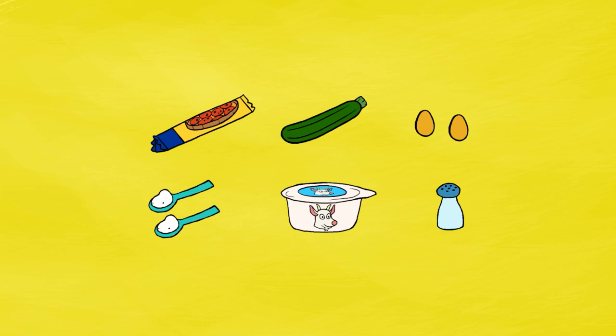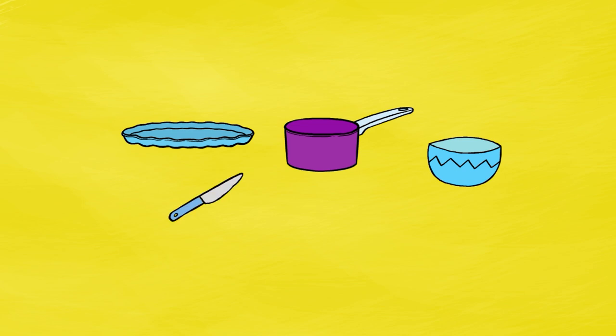Then you need the following kitchen utensils: a pie dish, a saucepan, a small bowl, an adult knife, a round tip knife and a fork.